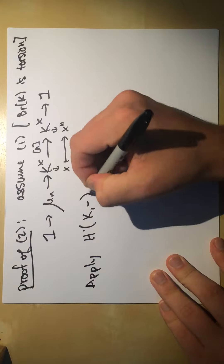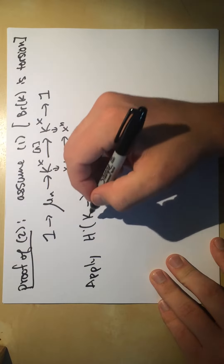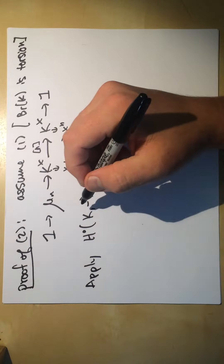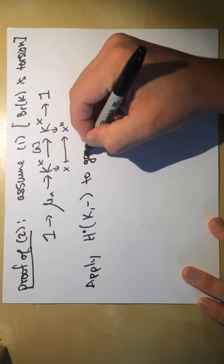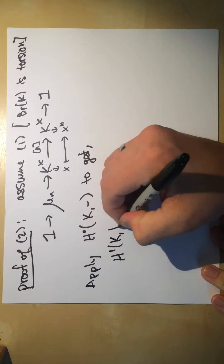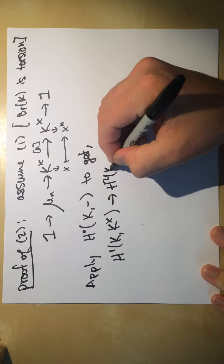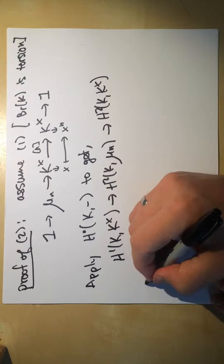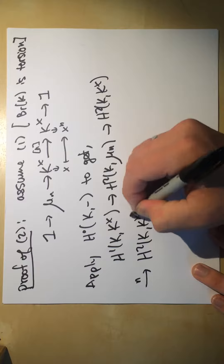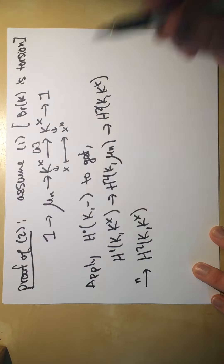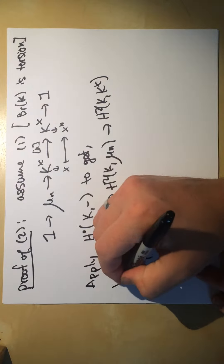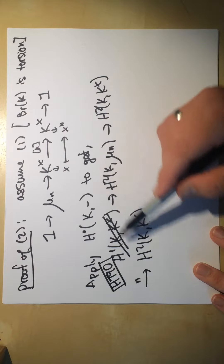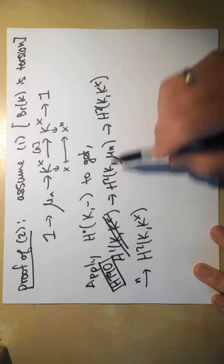We apply Galois cohomology — equivalently étale cohomology for fields — which is group cohomology with the absolute Galois group. Starting at H¹(k, k*), which is zero by Hilbert's Theorem 90, the sequence then goes to H²(k, μₙ) and H²(k, k*) with the multiplication-by-n map.